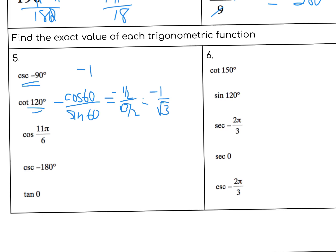For 11π/6, I'm thinking of π/6 which gives √3/2. Then 11π/6 is in quadrant 4 because that's almost 2π, so cosine is not negative — it's positive there. Cosecant is related to sine, and the sine of 180° is the same as the sine of 0°, which is 0, but cosecant is the reciprocal, so that's undefined. Tangent is sine over cosine: sine of 0 is 0, cosine of 0 is 1, so that's going to be 0.